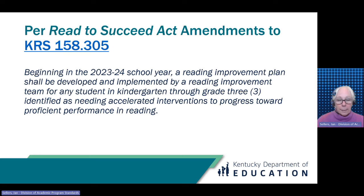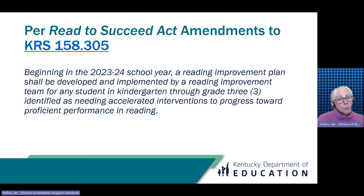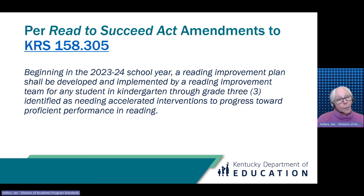As part of the Read to Succeed Act, beginning in the 2023-24 school year, schools are required by regulation to develop and implement a Reading Improvement Plan for any student K-3 identified as needing accelerated intervention to progress toward proficiency in reading. In response to questions from district and school leaders, the Kentucky Department of Education developed a template as an example that incorporates the requirements of KRS 158305.